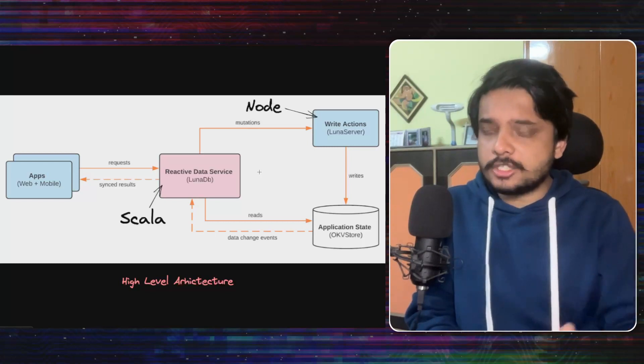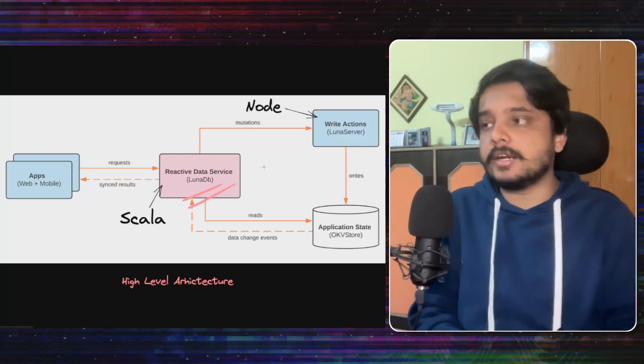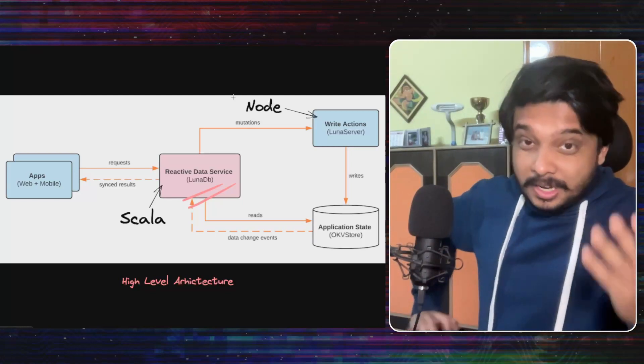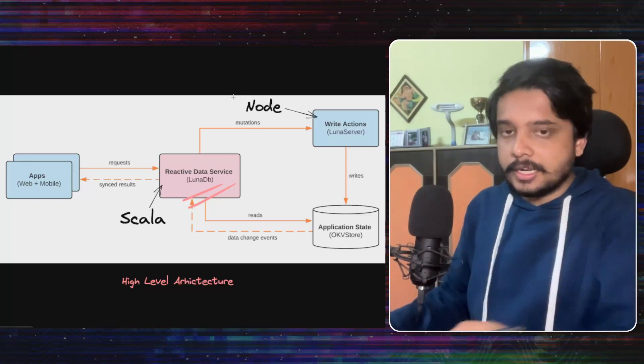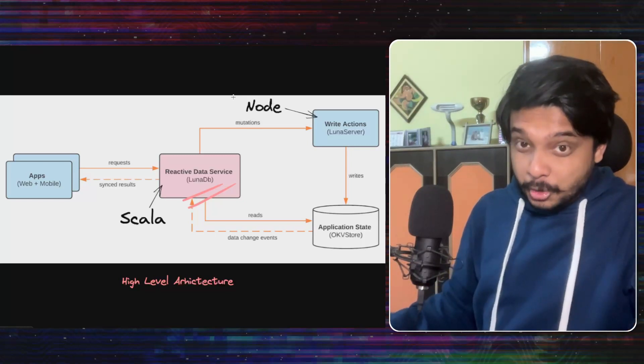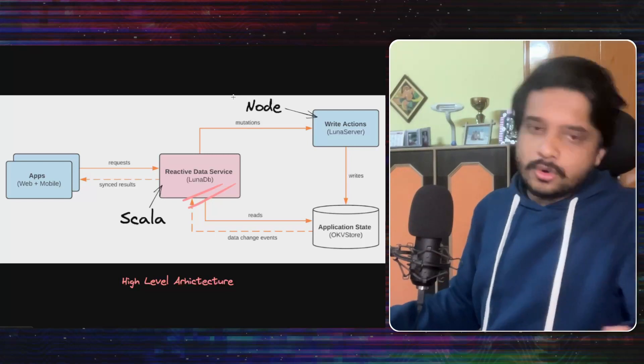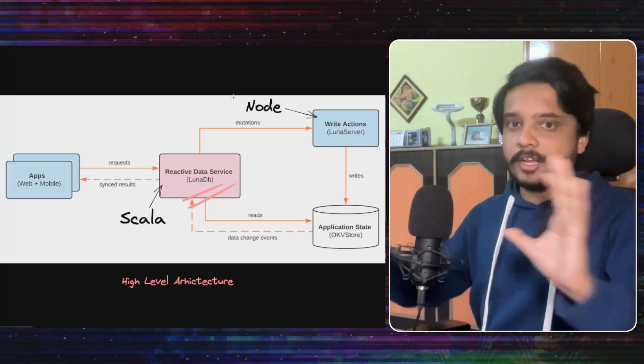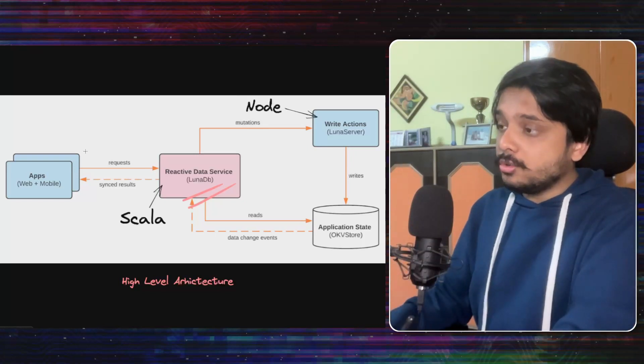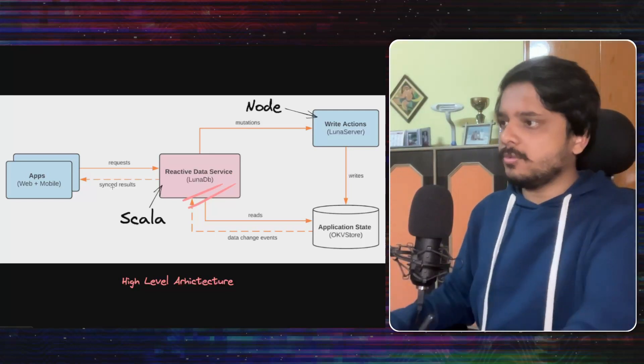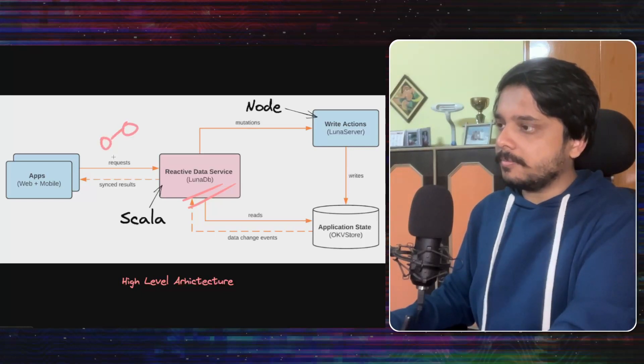They built a new service called LunaDB to power this real-time architecture. LunaDB kind of gives a GraphQL kind of interface for their data. If you don't know about GraphQL, it's OK, you don't really need to know about it to understand all of this. But if you know about it, then I think you can understand the resemblance that I'm trying to put here. So what the clients can do is they can send a request to the LunaDB service that gives me some data and the objects associated with it. So it gets in the form of a graph.